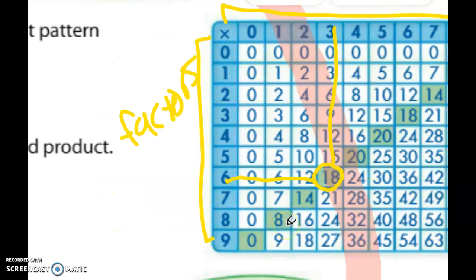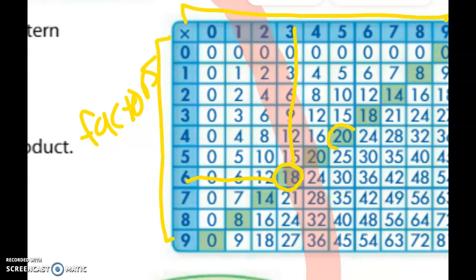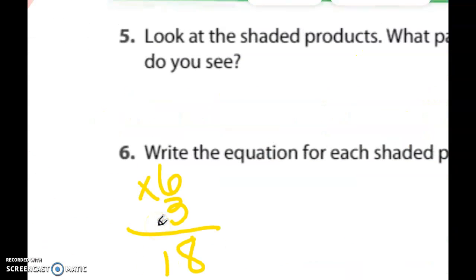We'll do one more together. So let's look at twenty. To get twenty, I multiply five times four. Five times four equals twenty.